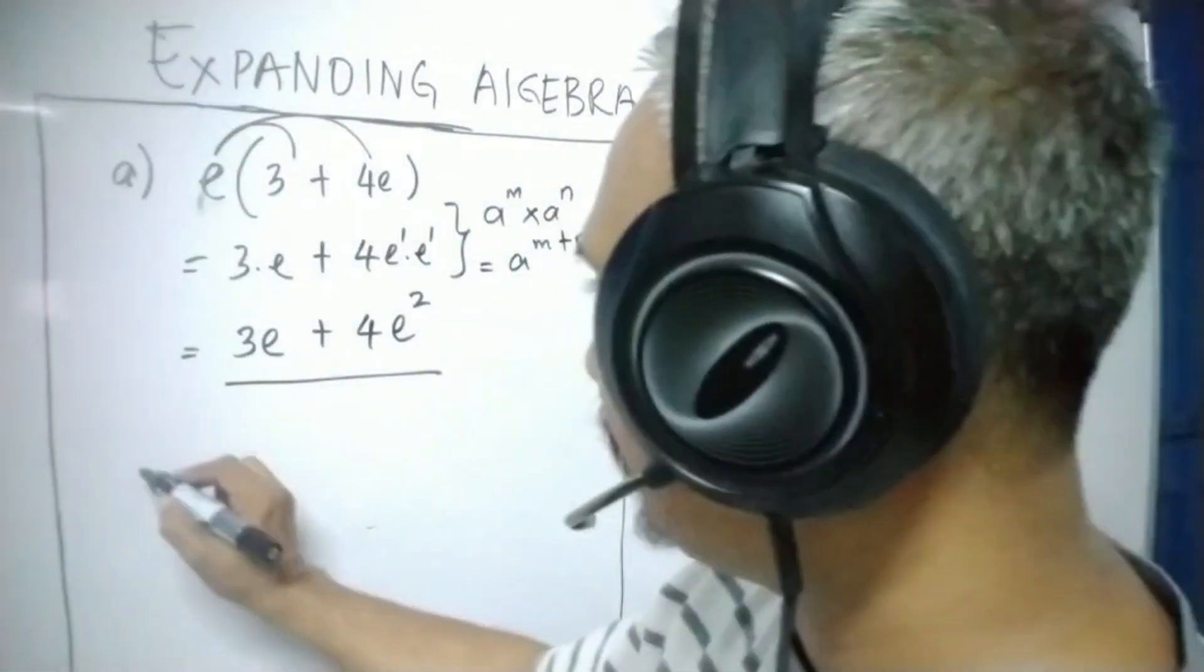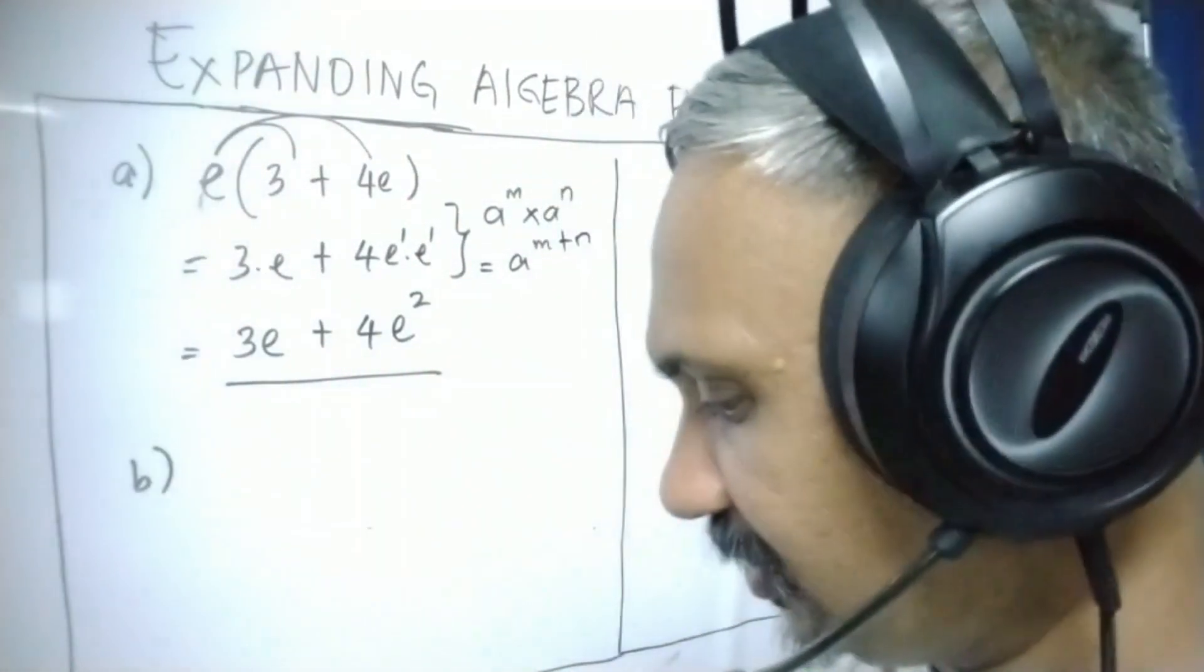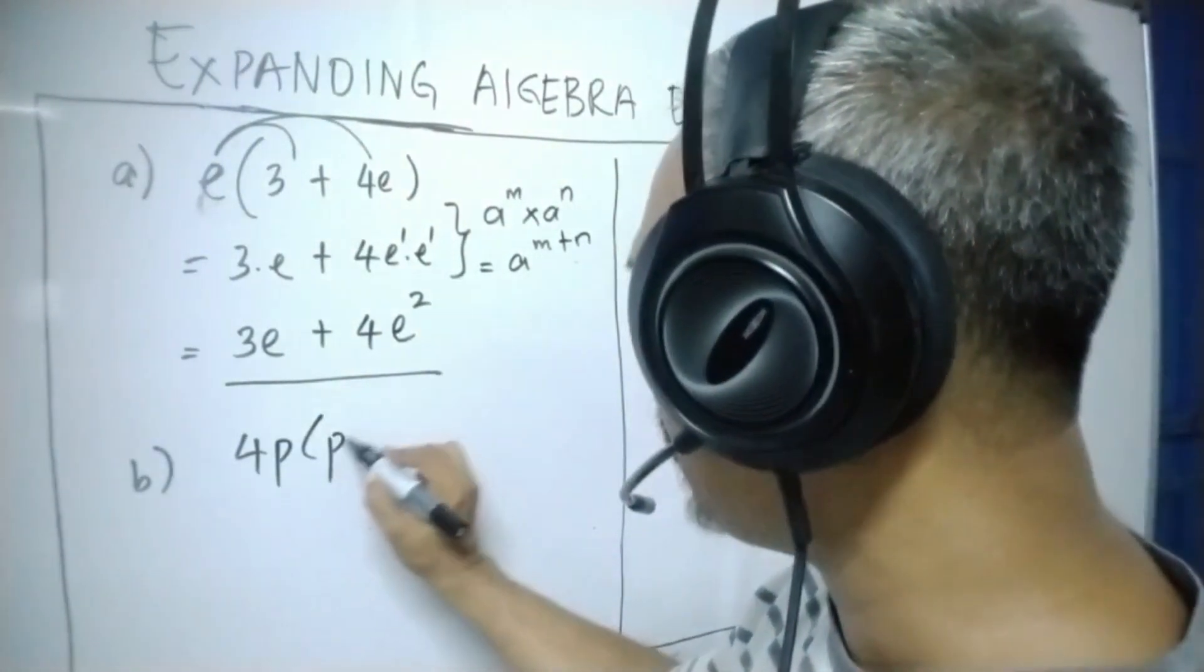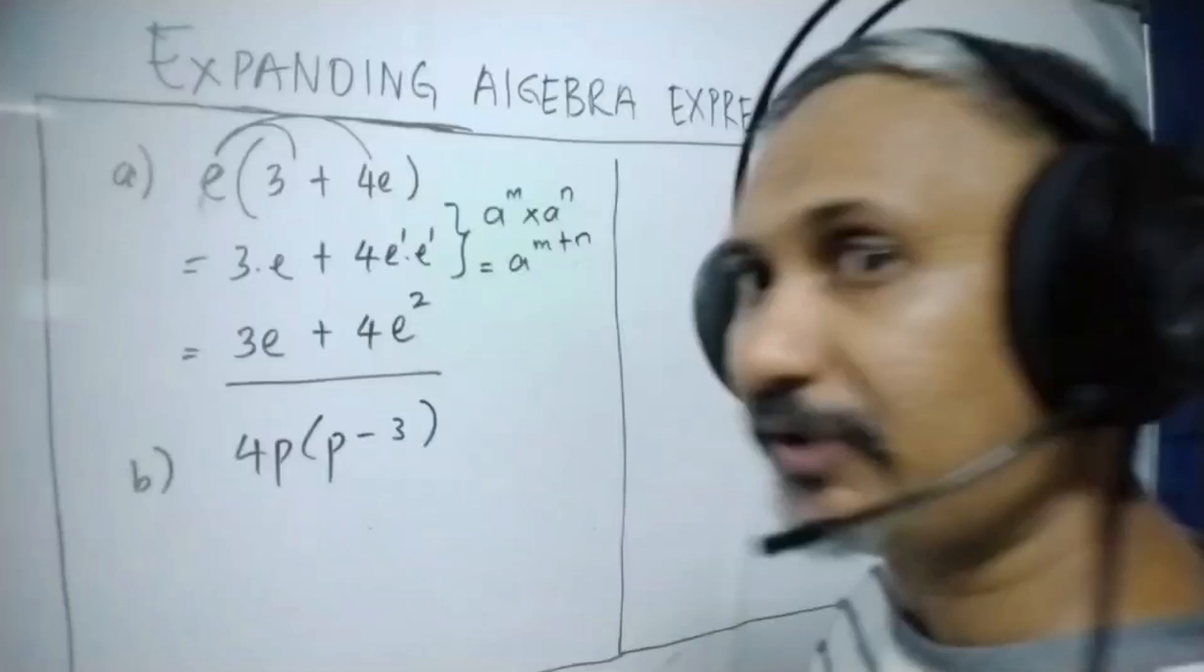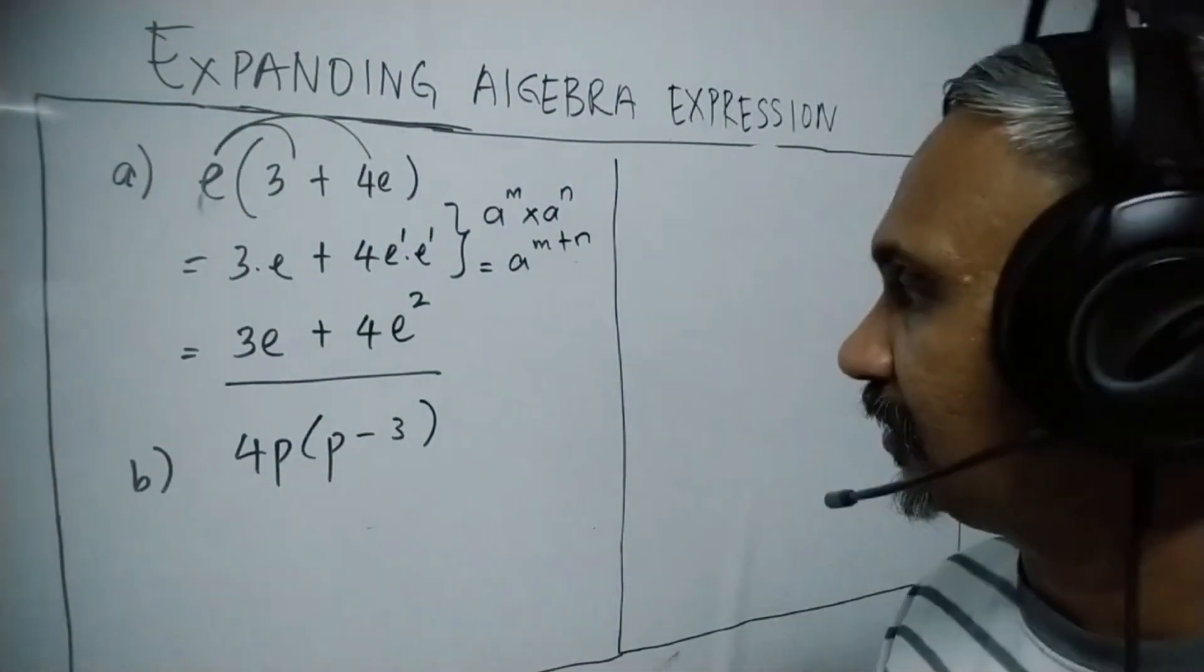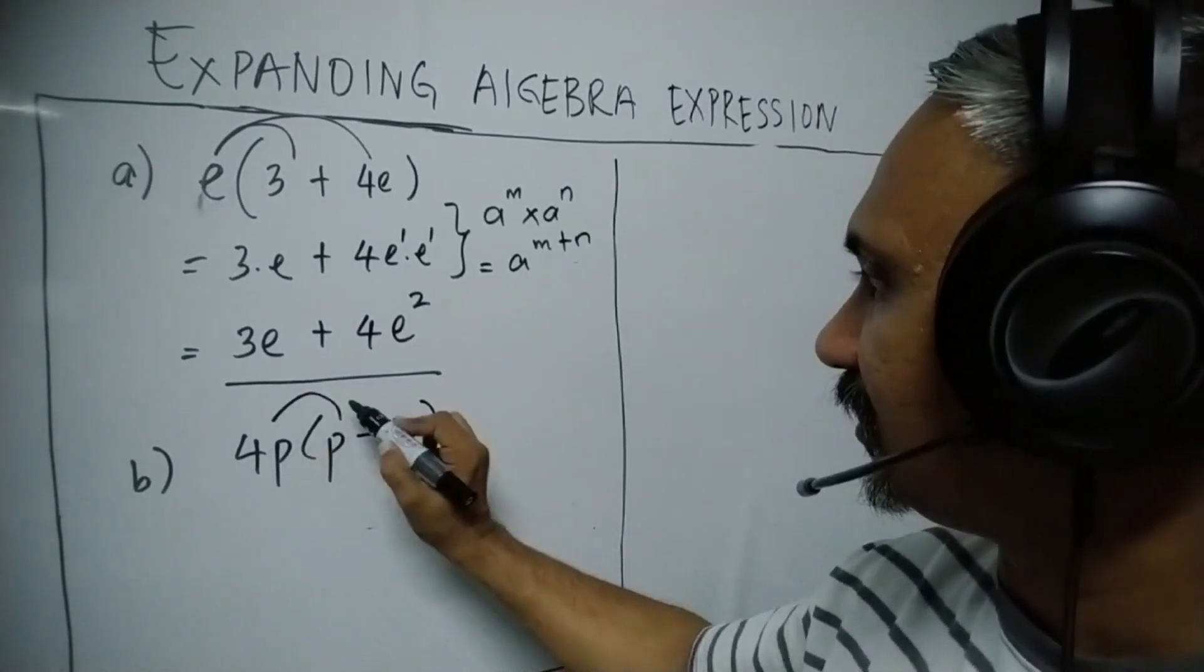And for the second question, just for a quick practice, we have here 4P times P minus 3. So what we can do here is we can just do direct multiplication easily.